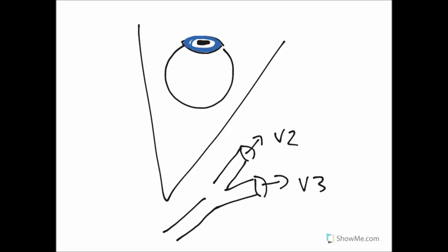The other branch goes off in this direction — that's V2, the maxillary division. It goes through the pterygopalatine fossa, comes into the orbit through the inferior orbital fissure, travels along a groove on the floor of the orbit, and exits onto the maxilla via the infraorbital foramen, supplying the sensory territory for V2 over the face. The one we're interested in is V1, the ophthalmic division, coming in through the superior orbital fissure.